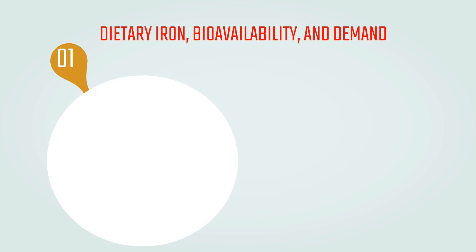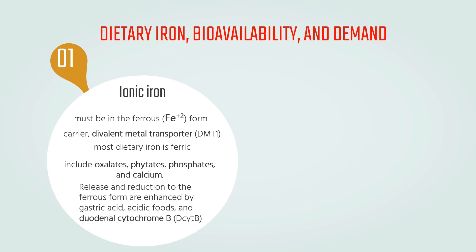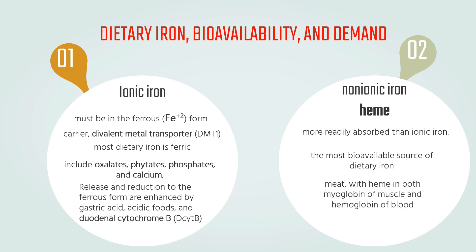Dietary iron bioavailability and demand. Iron can be absorbed as either ionic iron or non-ionic iron in the form of heme. Ionic iron must be in the ferrous form for absorption into the enterocyte via the luminal membrane carrier, divalent metal transporter. However, most dietary iron is ferric, especially from plant sources, and is not readily absorbed. Other dietary compounds can bind iron and inhibit its absorption, including oxalates, phytates, phosphates, and calcium. Release from these binders and reduction to the ferrous form are enhanced by gastric acid, acidic foods, and an enterocyte luminal membrane protein, duodenal cytochrome B. Heme with its bound iron is more readily absorbed than ionic iron. The most bioavailable source of dietary iron is meat, with heme in both myoglobin of muscle and hemoglobin of blood.